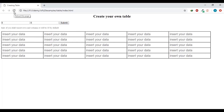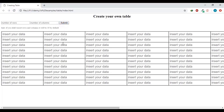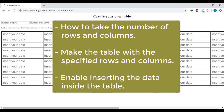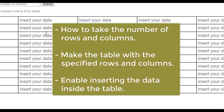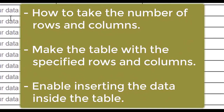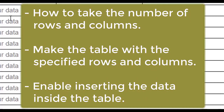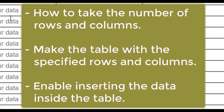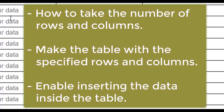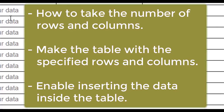If the user didn't insert the rows and columns, it will be 10 by default. The idea here is how to take the number of rows and columns, make the table with those specified rows and columns, and enable inserting data inside the table. Consider it as a quiz and start thinking, then go to the main video for any help.